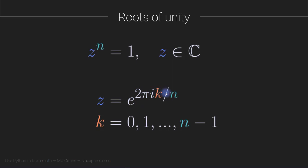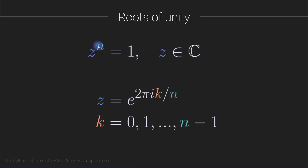It turns out the way to define z is according to this formula: z equals e to the power of 2πik divided by n. Pi is the number 3.14 and so on, i is the imaginary operator or the square root of minus one, and k is a set of numbers that goes from zero to n minus one. So if n is five, then k would be zero, one, two, three, four. For each value of k, you put k into this formula to get a z, then raise z to the nth power, and that gives you one. So for n equals five, there are five roots of one — there are n nth roots.